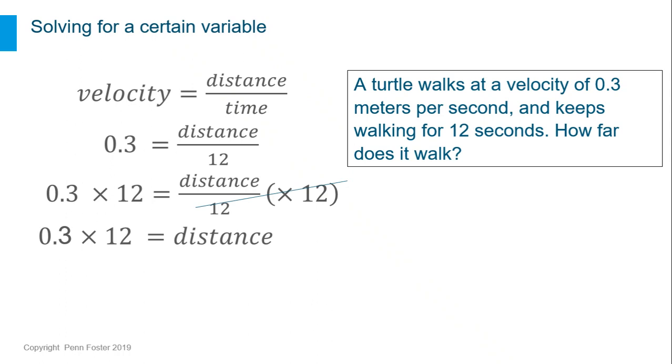This gives you 0.3 times 12 equals distance. The final step is to multiply the values, giving 3.6 meters equals distance.